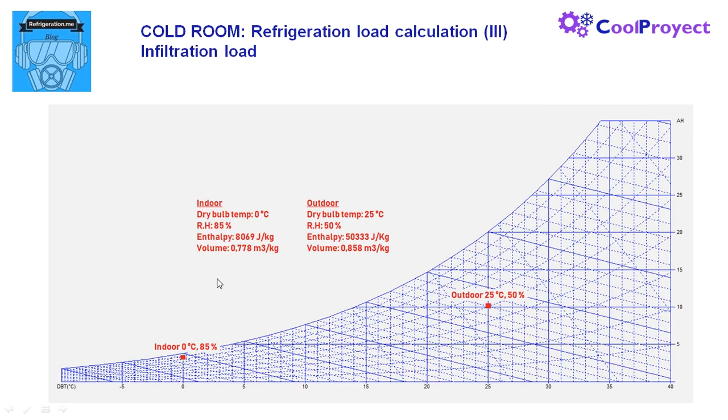For each point we have dry bulb temperature, relative humidity, and enthalpy. For the indoor point it is 8069 joules per kilogram. And for the outdoor point is 50,333 joules per kilogram. We can see that the specific enthalpy or energy of the outdoor air is higher than the one of the indoor air.